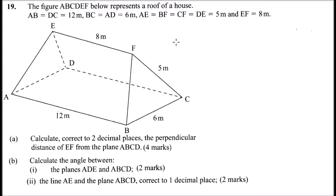This is question number 19. The figure ABCDEF represents the roof of a house. We are given that AB equals DC equals 12 centimeters, BC equals AD equals 6 centimeters, AE equals BF equals CF equals DE equals 5 meters, and EF equals 8 meters.